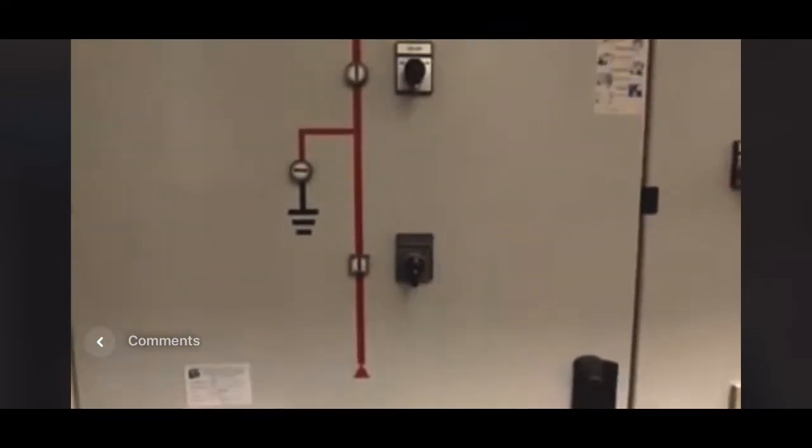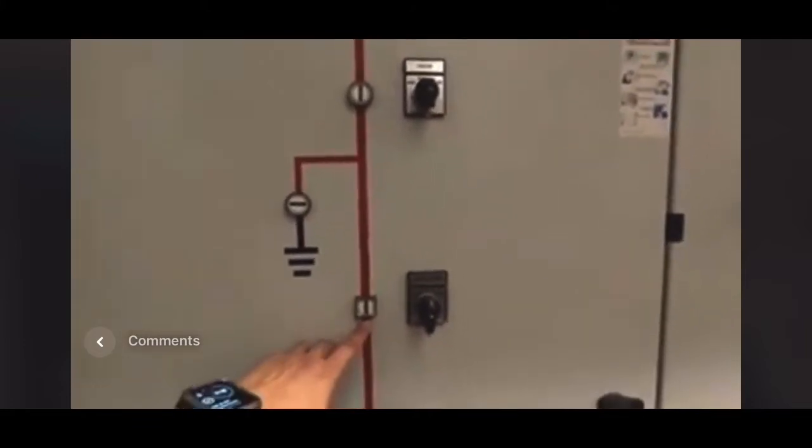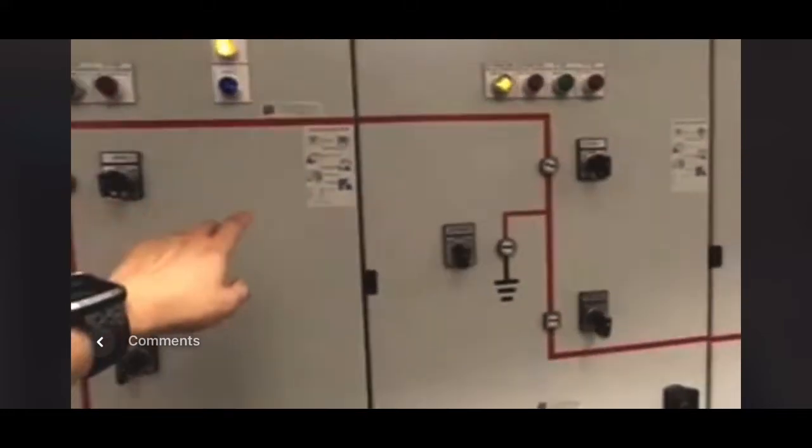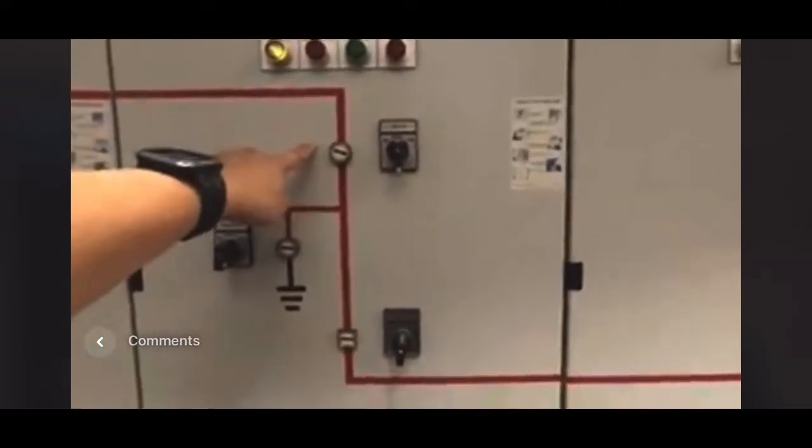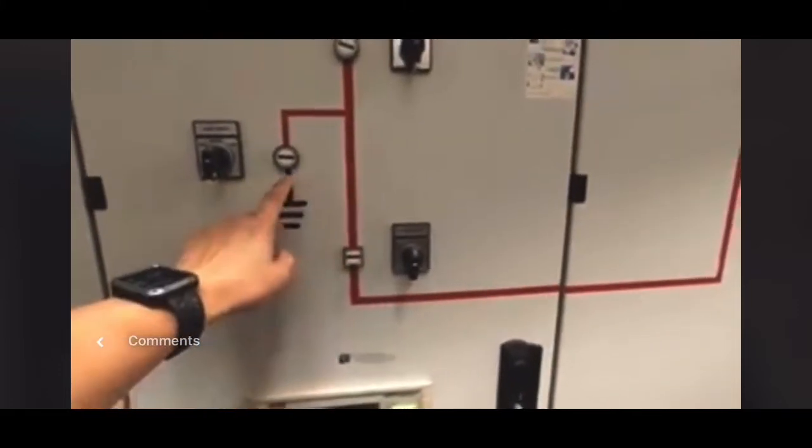This is the GIS switchgear. Currently it is in on position. This is the Earth switch. This is the isolator. And here we have the coupler unit. This is the isolator. This is the breaker unit GIS. The Earth switch.